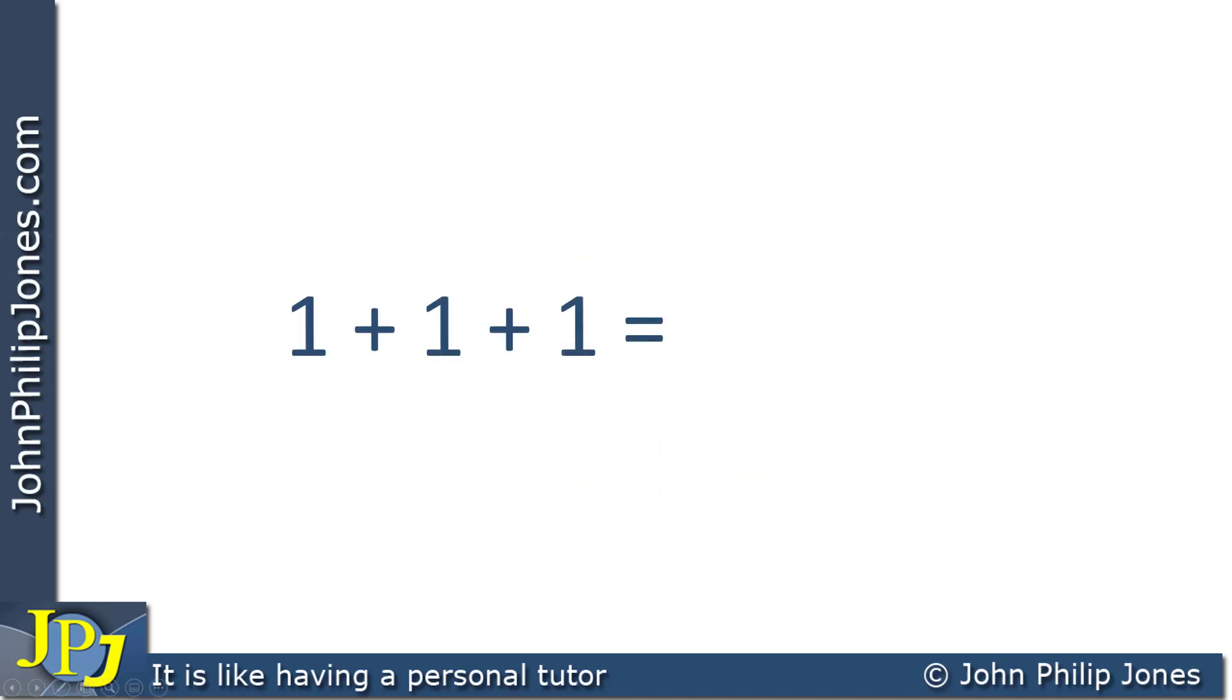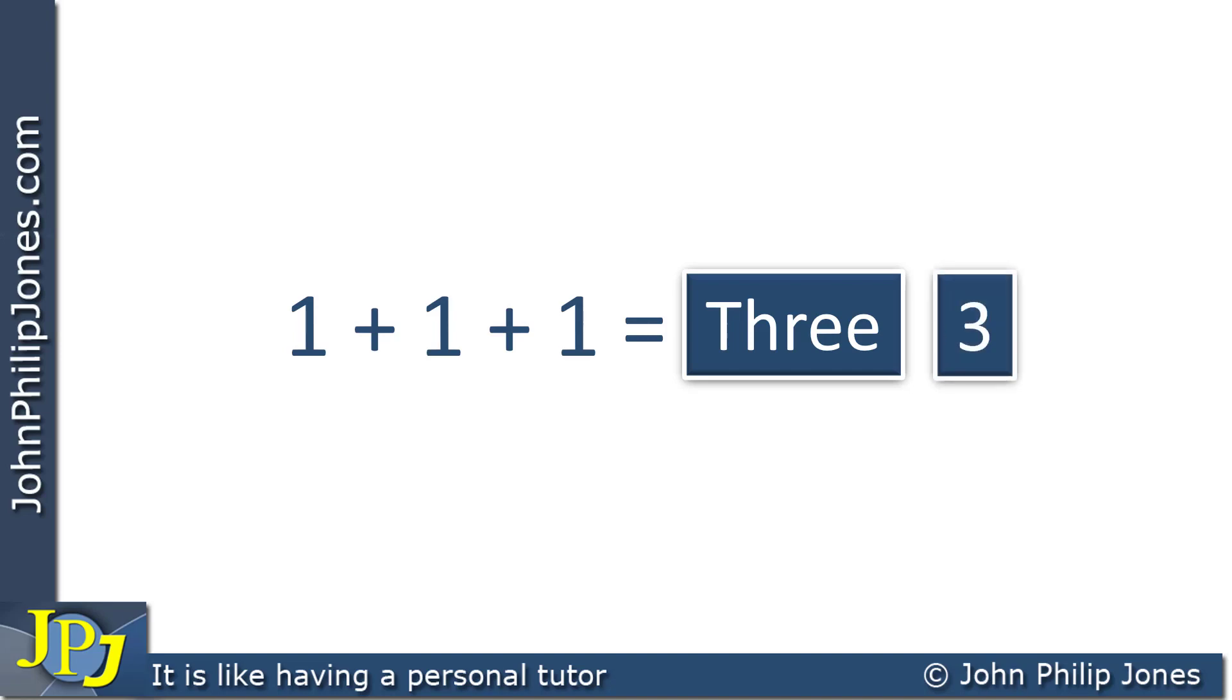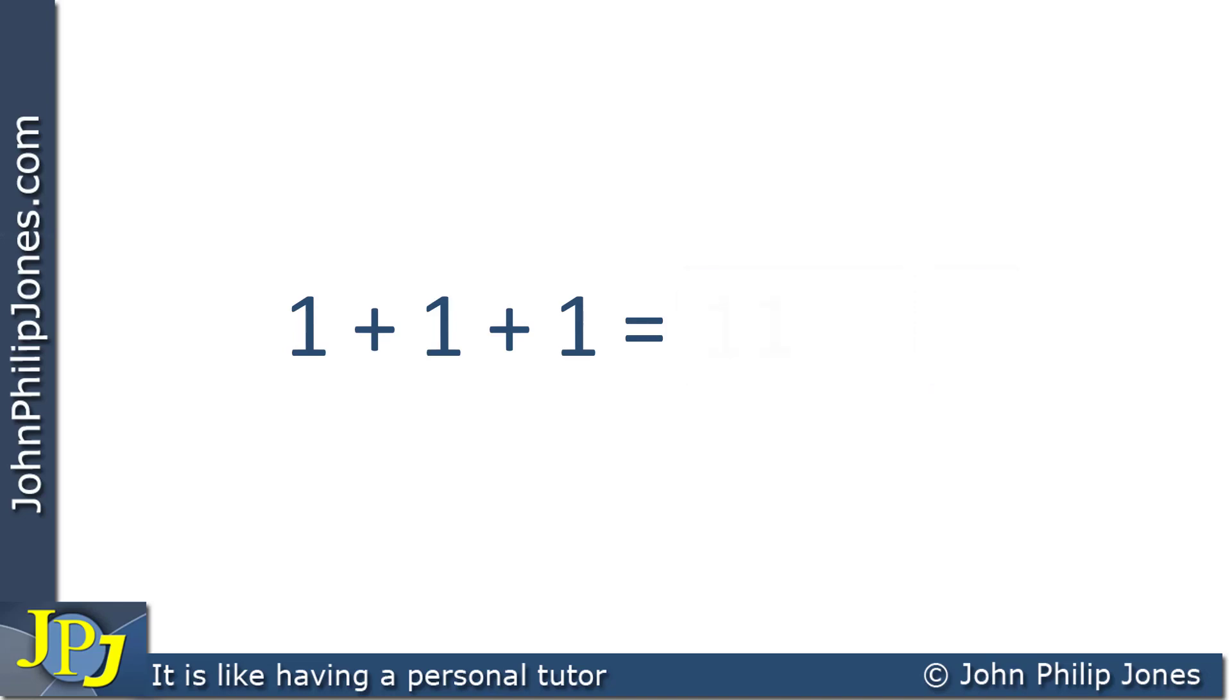Let's consider the example where we're adding 3 ones up. Now, what this will give us is the value of 3, because 1 plus 1 plus 1 is 3. And if we were dealing with denary, we would write this figure down. But we're not dealing in denary, we're dealing in binary. Now, binary 3 looks like this, 1, 1, because this position is worth 1, and this position is worth 2. And when you add those together, you get 3.